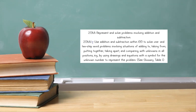Standard 2.0 AA1: use addition and subtraction within 100 to solve one and two-step word problems involving situations of adding to, taking from, putting together, taking apart, and comparing with unknowns in all positions — for example, by using drawings and equations with a symbol for the unknown number to represent the problem.